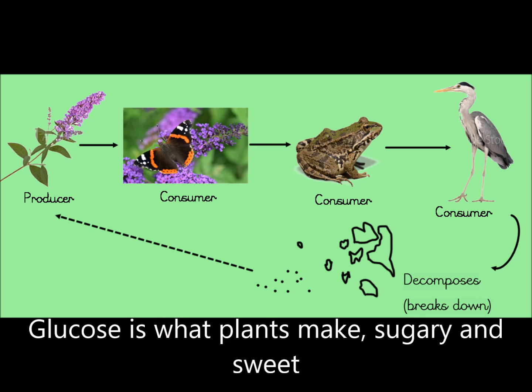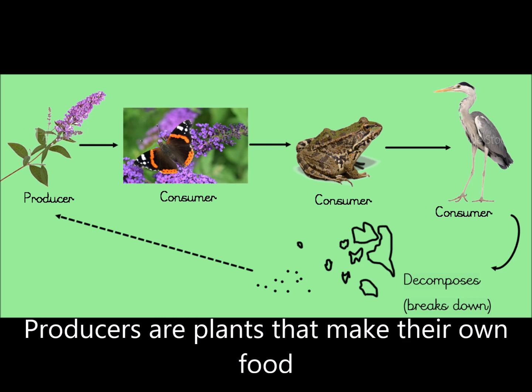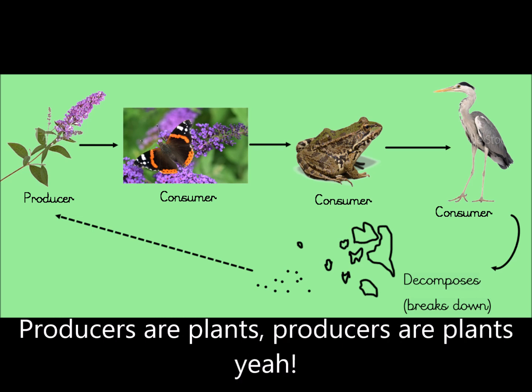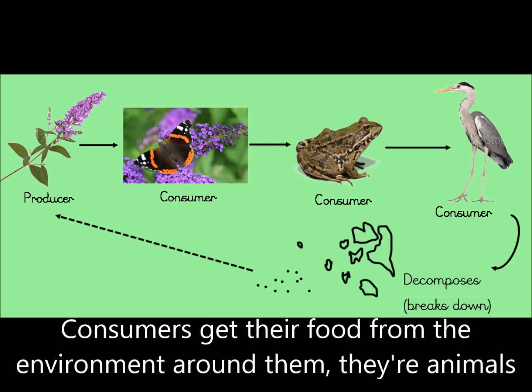Glucose is what plants make — sugary and sweet. Producers are plants, they make their own food. Consumers get their food from the environment around them.